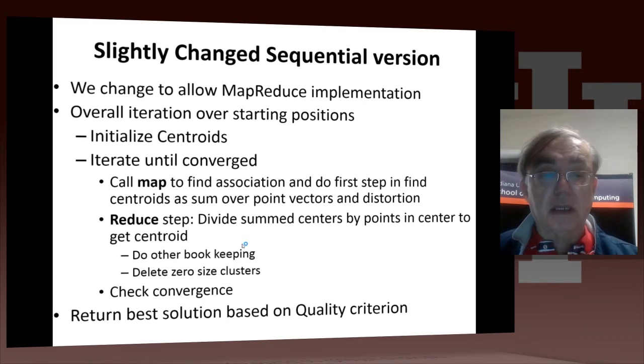The convergence is done on the change in the distortion. Now we have this little change in the algorithm which we'll see in the Python code, where we call the Map to find the association of points to the current centroids. Then we just do the first step in finding the centroids by summing over the point vectors. We don't do the final steps.